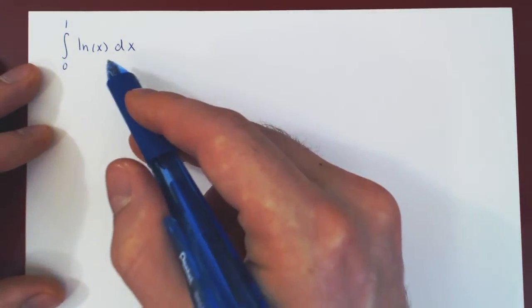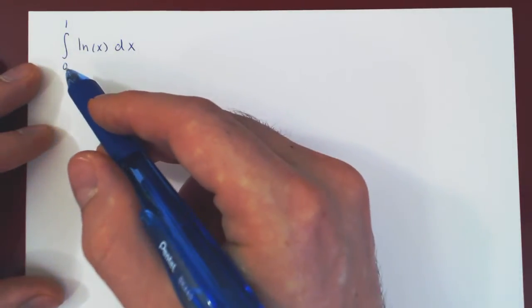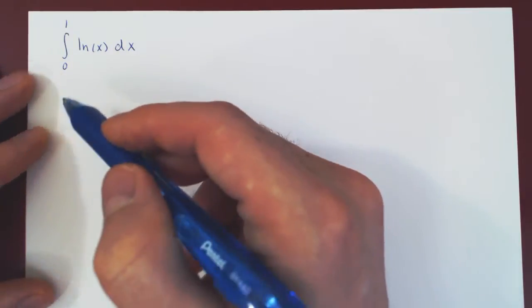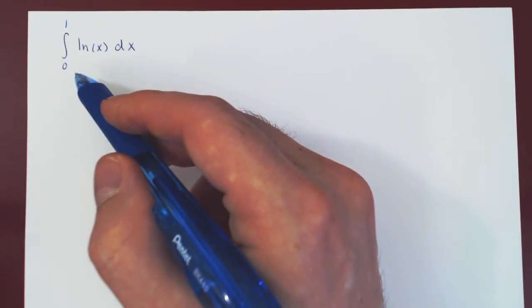So why is this integral improper? Well clearly it's not of type 1 as we have a finite range of integration. So if this is to be an improper integral it must be of type 2.